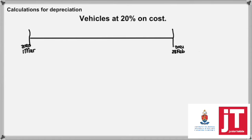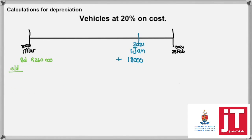So if we have a timeline, this is the 1st of March 2020 at the beginning of our year, and we end on the 28th of February 2021. Super important — please draw timelines, because you will not understand adjustments if you don't know when you need to record for. It's much easier to see in front of you than to try and figure it out in your mind. So put pen to paper and draw a timeline. Then we put down what we know for vehicles: at the beginning of the year we had a balance of 260,000 Rand, and we bought a new vehicle on the 1st of January for 18,000 Rand. So that's two vehicles — the old one for 260,000 and the new one for 18,000.